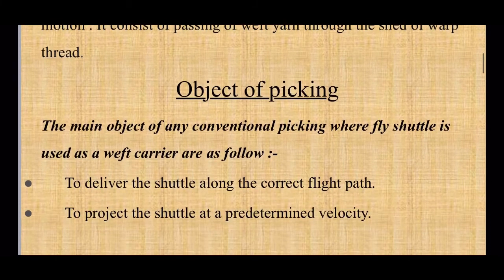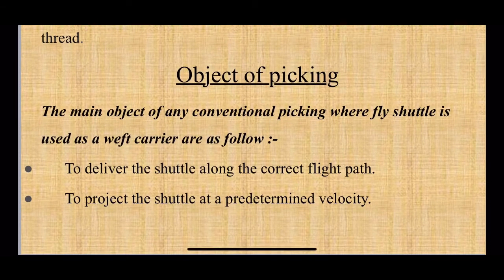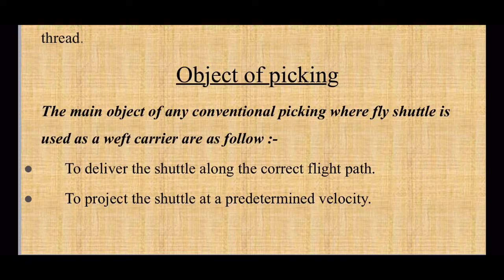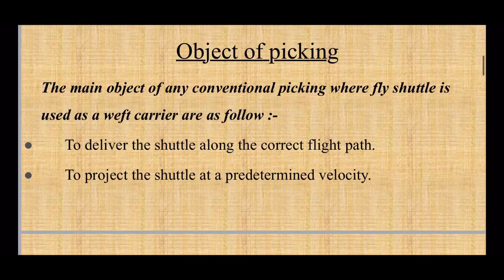Now, what are the objects of picking? The main objects of any conventional picking — where fly shuttles are used as weft carriers — are as follows. First, to deliver the shuttle along the correct flight path. Second, to project the shuttle at a predetermined velocity so that it can travel from one shuttle box to another.